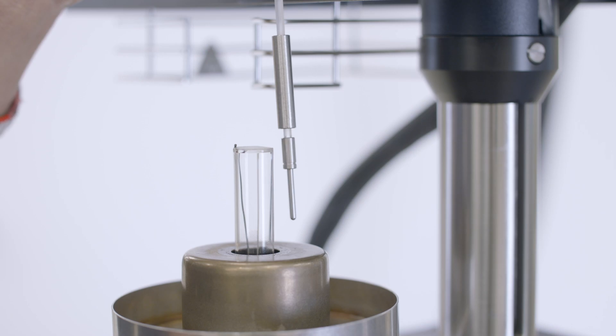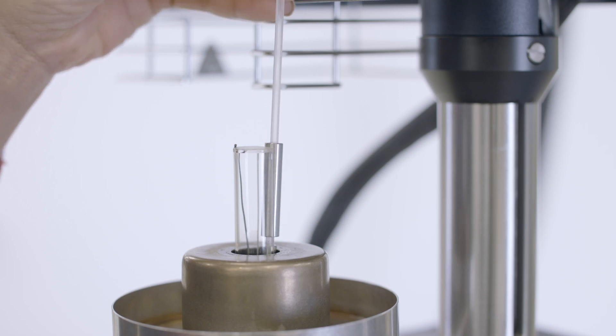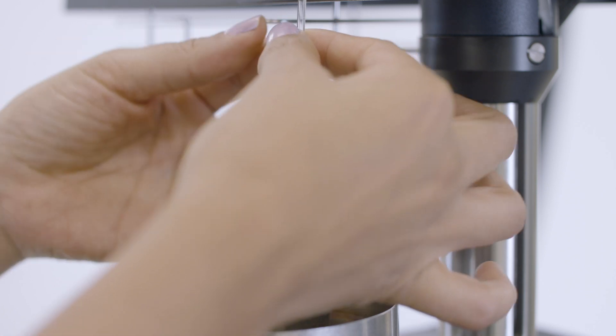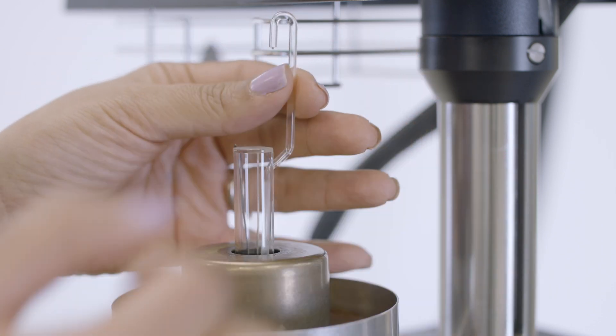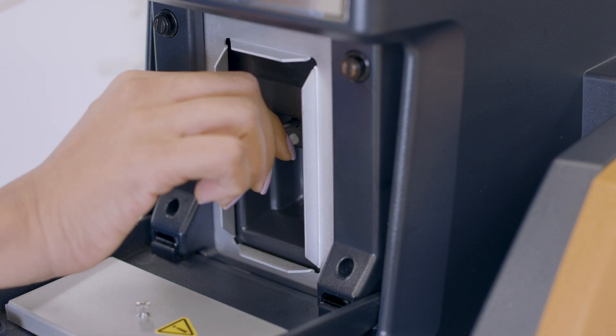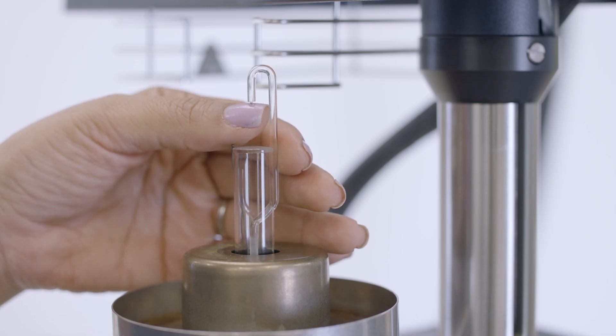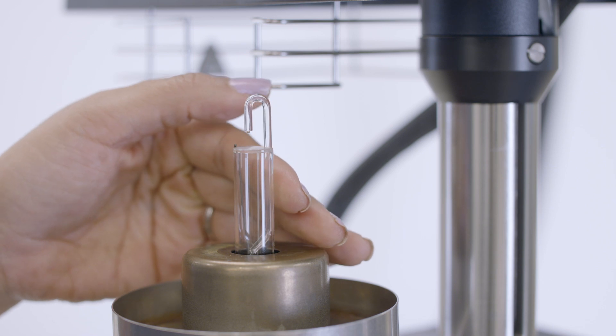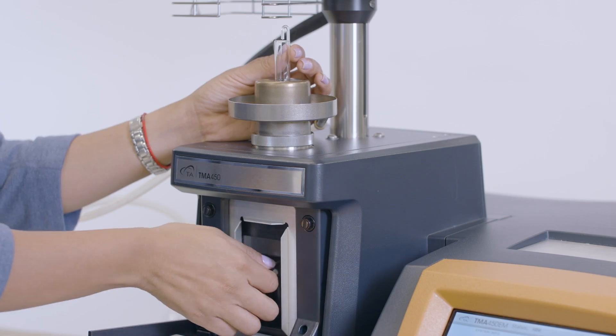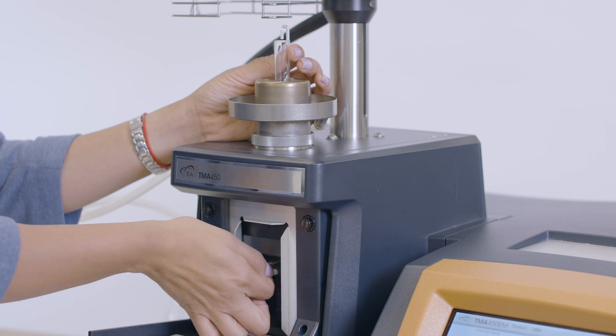The probe to be installed is the penetration probe. Insert the end of the probe into the opening in the back of the stage. Hold the probe locking lever in the up position and continue lowering the probe into the stage until you feel it sits in the locking mechanism. Tighten the probe locking lever by turning it clockwise.